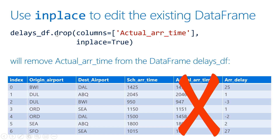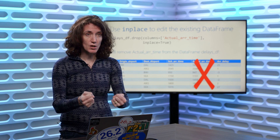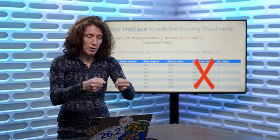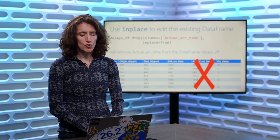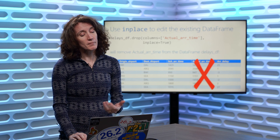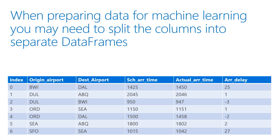So if you want to actually save the change, you assign the result back to the delays data frame — that's a way to change the delays data frame in place.